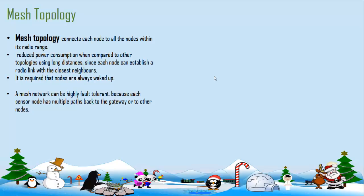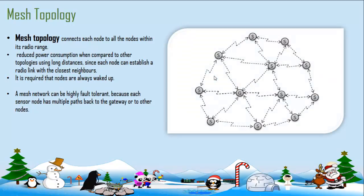Now, we have another kind of topology. It's called a mesh topology. What happens here is that each node is connected to all the nodes within that radio range. So we can expect reduced power consumption compared to other topologies. And if one node goes down, it's much more fault tolerant because it has other pathways to continue the communication to happen. The another thing that you can expect in mesh topology is that all the time they're on, they're all waked up.